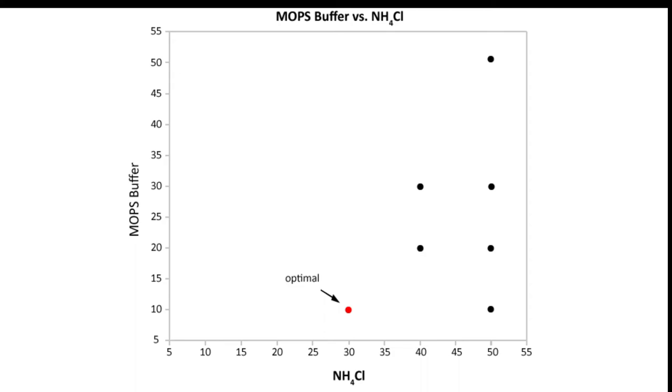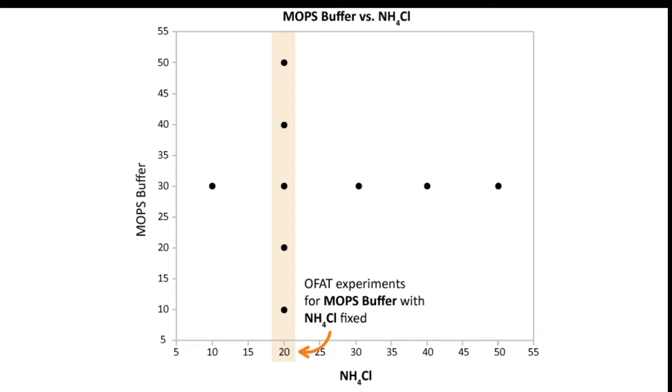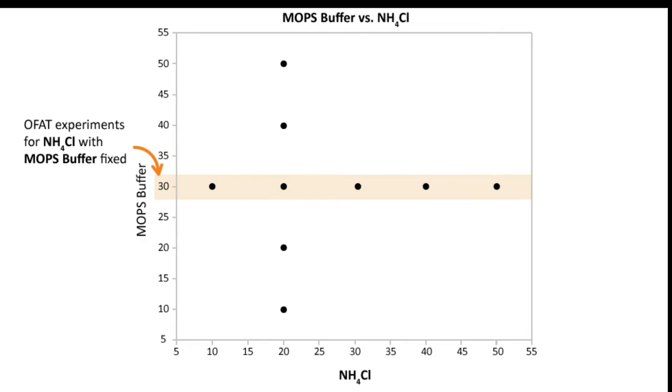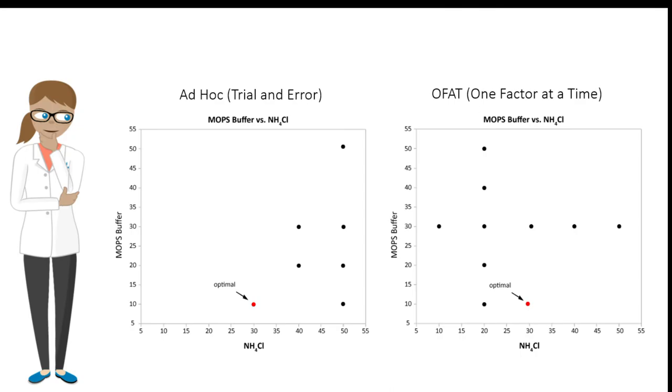Anna's OFAT design might look something like this. Here, ammonium chloride concentration was fixed at 20 millimolar during the experiments for MOPS buffer, and MOPS buffer was fixed at 30 millimolars for the experiments for ammonium chloride. And the optimum is here.